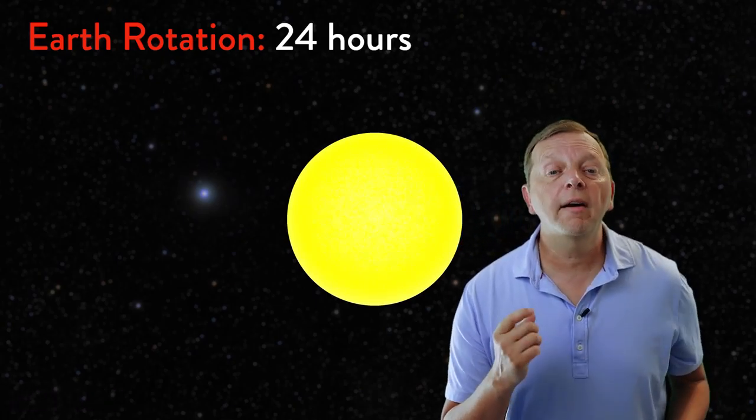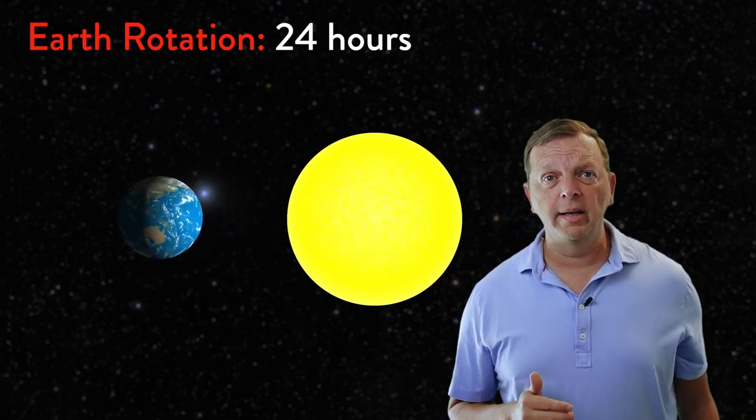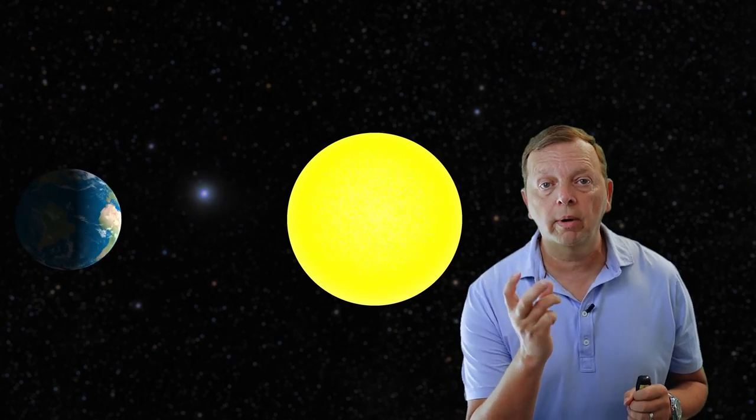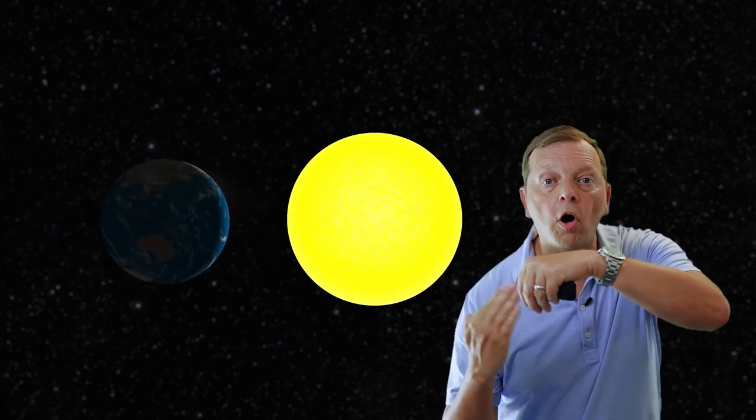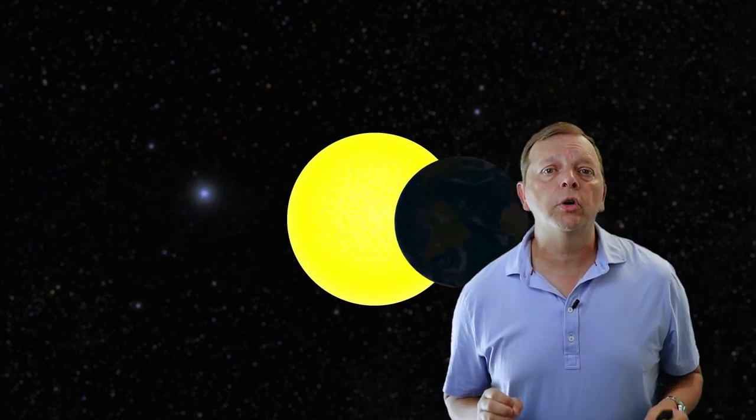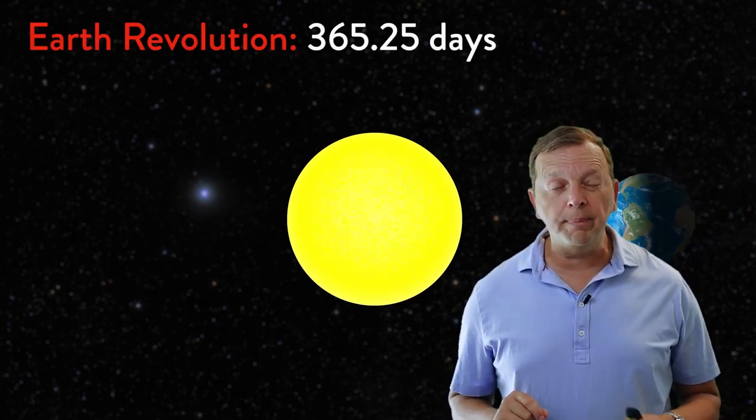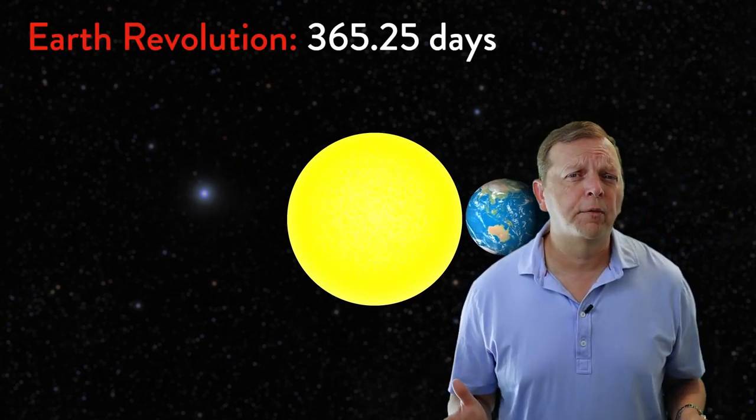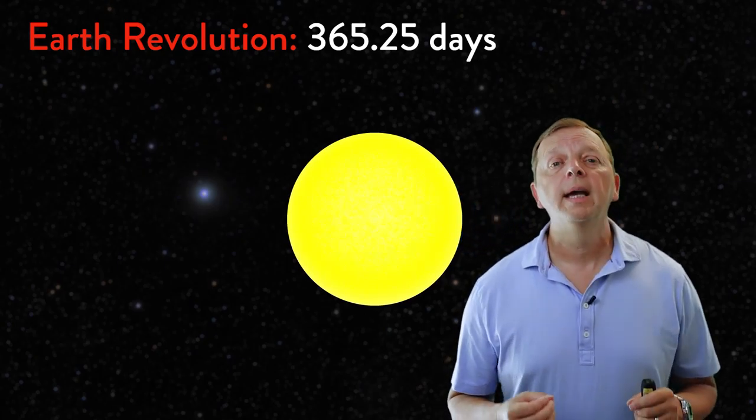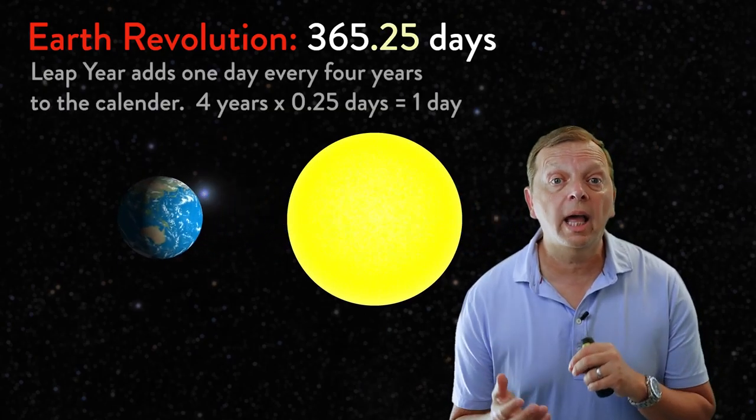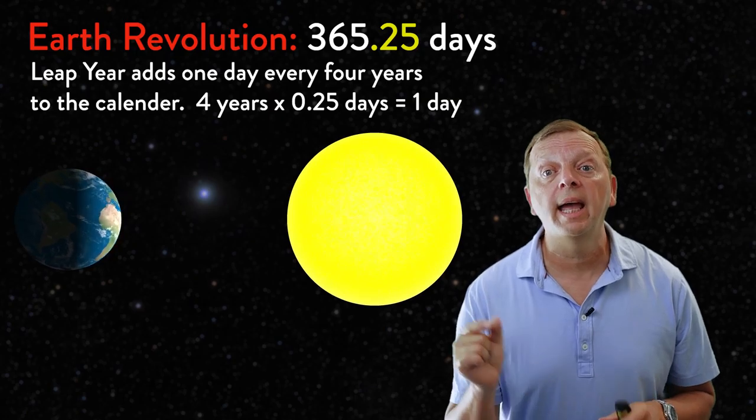The Earth will rotate on its axis every 24 hours, which gives us day and night. But as the Earth is rotating around on its axis, it is also revolving around the Sun. This is a journey that takes the Earth 365 and one quarter days to complete. By the way, if you ever wondered why every four years we have leap year in February, it is how our calendar accounts for that extra quarter day every year.